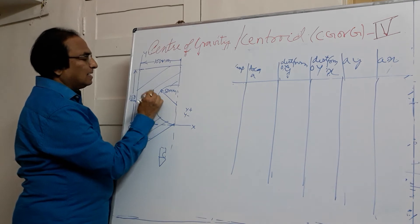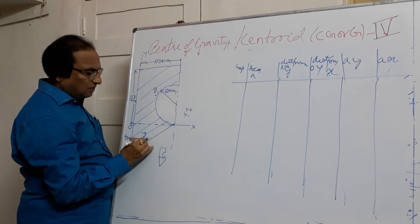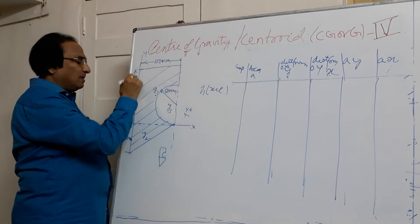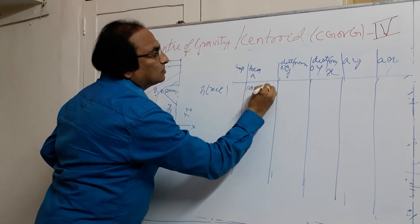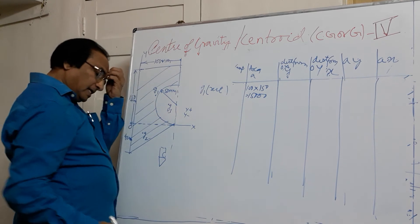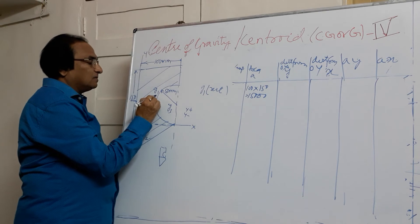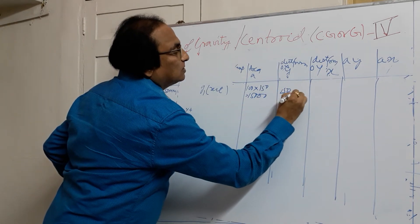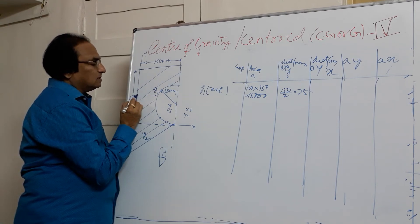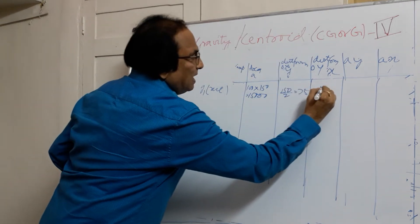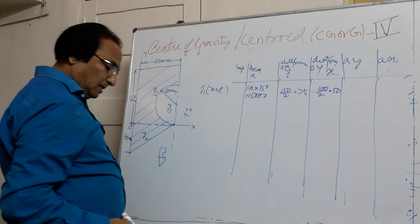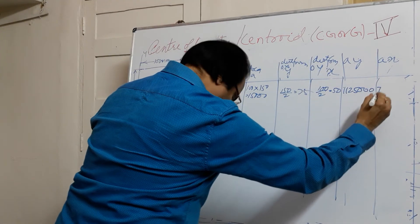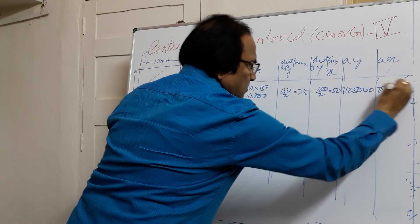Dividing the figure: G1 is a rectangle of size 100 mm by 150 mm, giving an area of 15,000 mm². The distance of the centroid from OX is half of 150, which equals 75. The distance from OY is half of 100, which equals 50. Multiplying: AY equals 1,125,000 and AX equals 750,000.